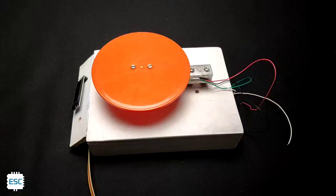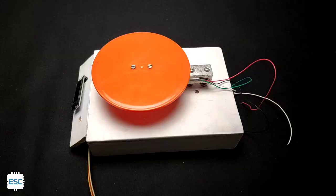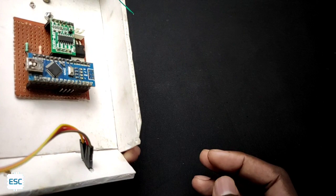After that I placed the OLED display on the front panel of the base. Also fixed the circuit inside the base. After that I soldered load cell wires to the amplifier.